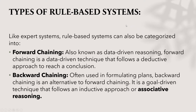What are the types of rule-based system? Like expert systems, rule-based systems can also be categorized into forward chaining and backward chaining. Forward chaining, also known as data-driven reasoning, is a data-driven technique that follows a deductive approach to reach a conclusion. Backward chaining is an alternative to forward chaining, often used in formulating plans. It is a goal-driven technique that follows an inductive approach or associative reasoning.